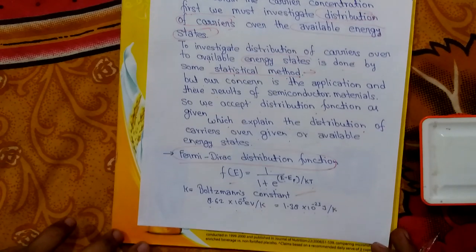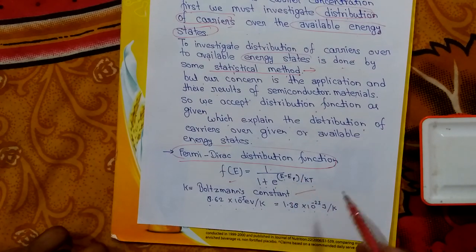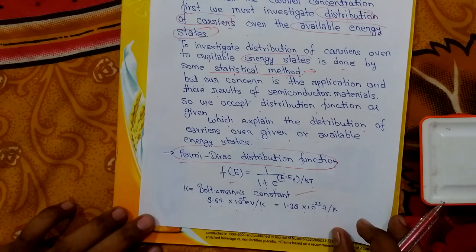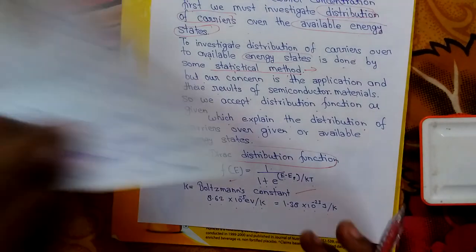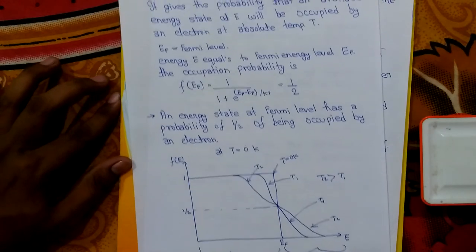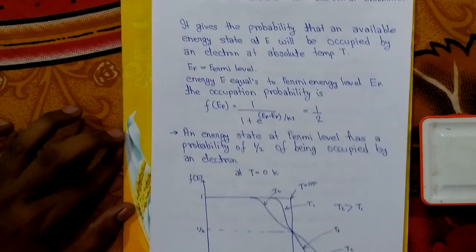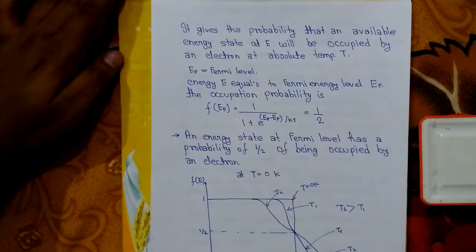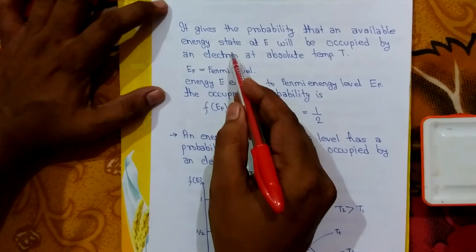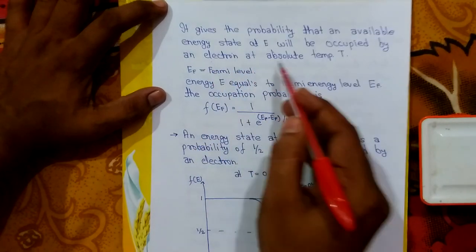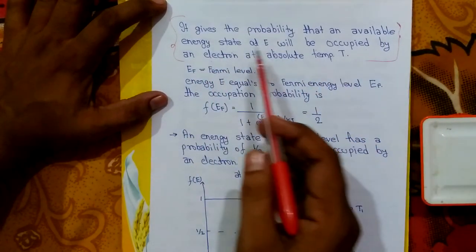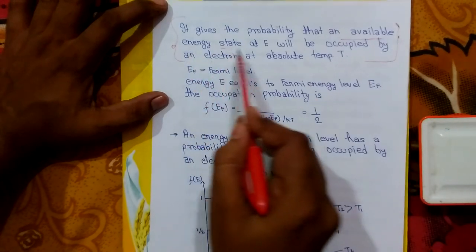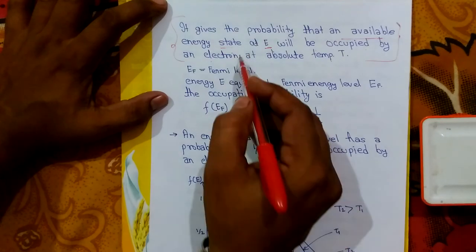First we have to see how the distribution of carriers is present in the semiconductor, and after that we will see the number of charge carriers per centimeter cube. The Fermi-Dirac function gives the probability that an available energy state at energy E will be occupied by an electron at absolute temperature T.